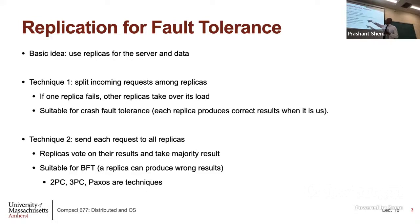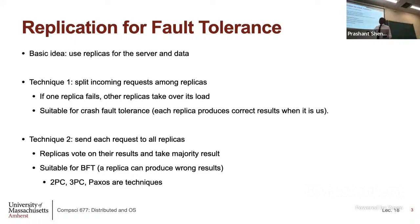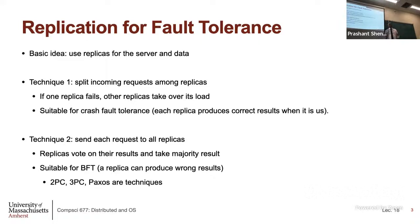That is what is going to get us to consensus. There are two things we will look at: how do you make agreement in the presence of crash failures, and how do you do this for Byzantine failures? Let us assume there are N replicas. If you are only worried about crash failures, the problem of replication is simpler. In the normal case, incoming requests are sent to replicas for load balancing. If one replica fails, someone else takes over and you are done — you never get an incorrect output, just no output.